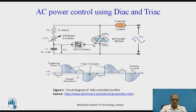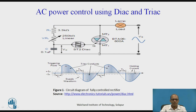In the positive half cycle of the input, capacitor C charges. The charging path for capacitor C is from the positive of the line through the lamp, resistance R1, VR1, and this capacitor. When the voltage across capacitor C exceeds the break-over voltage of DIAC, DIAC becomes ON and conducts. When DIAC conducts, capacitor C discharges through the conducting DIAC, gate and MT1 of the TRIAC. Therefore, a positive gate pulse is applied with respect to MT1 and the TRIAC is forward biased, so TRIAC becomes ON. When TRIAC becomes ON, it is equivalent to a closed switch. Therefore, current flows from the positive of the line through the lamp and the TRIAC, and power is applied to the lamp.